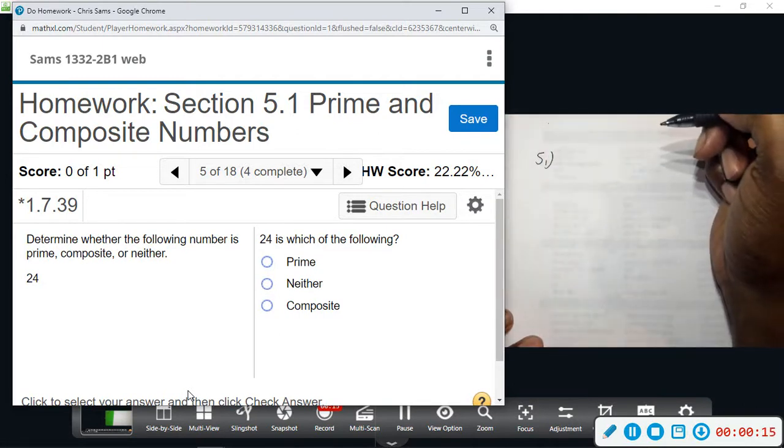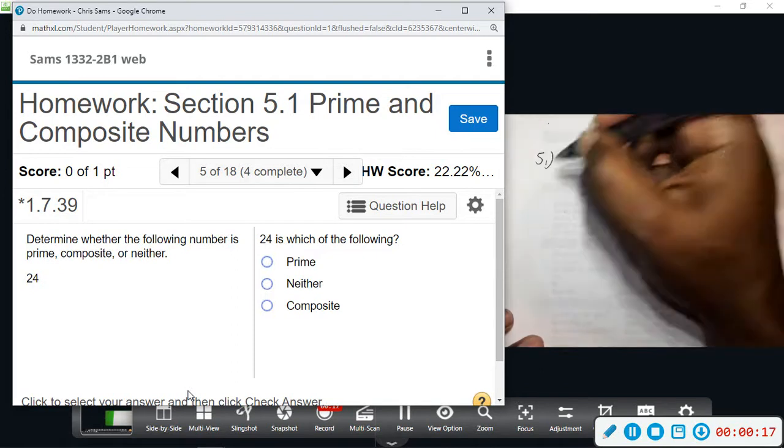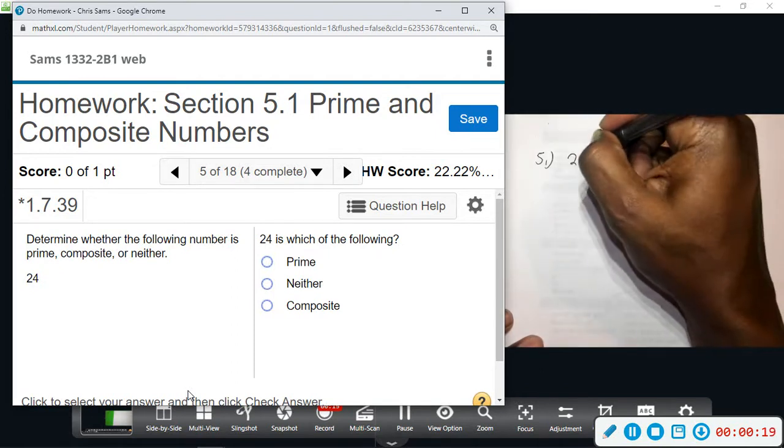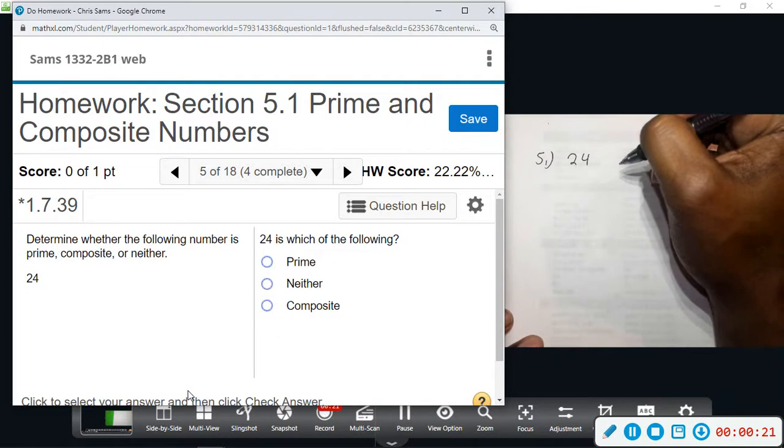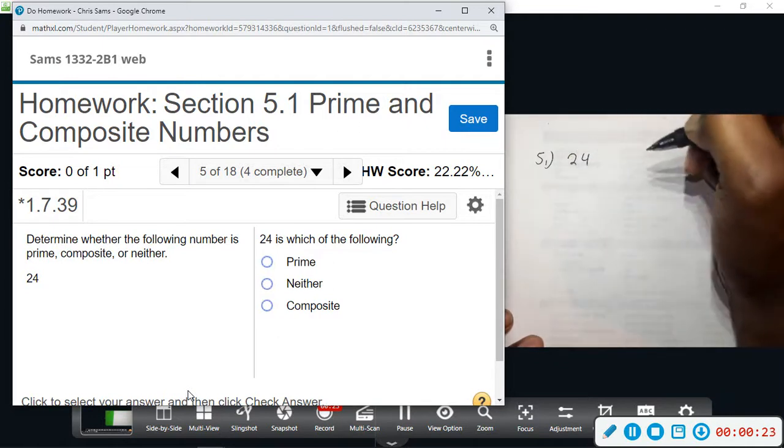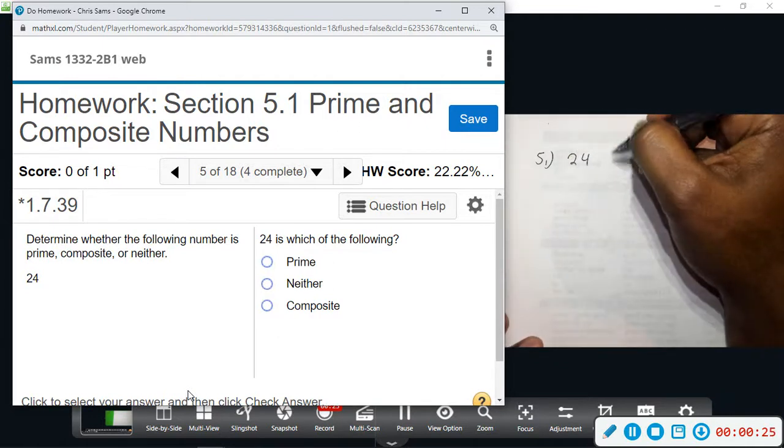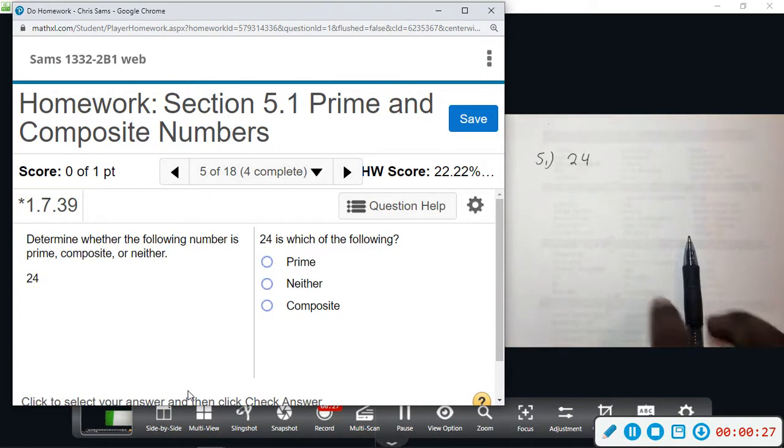We know that 24, being that it is even, is divisible by two. So we have one, itself, and two. So this is not prime. It's going to be composite. There is one number that is neither prime nor composite, that will be one by definition.